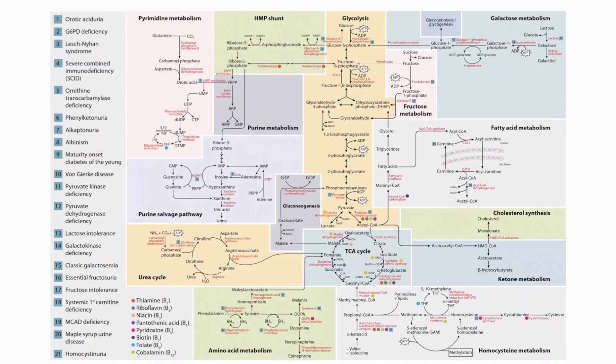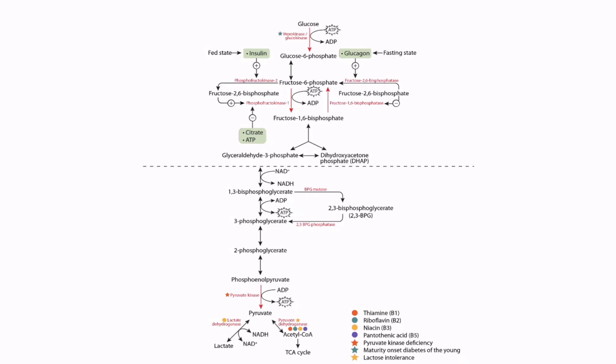This figure is from section 1 of Metabolism and provides an overview of the key metabolic pathways. In this section, we're focusing on glycolysis. Notice that the key enzymes are shown in red. Also note that some of the reactions are reversible, shown by bidirectional arrows, while others are irreversible, shown by the red arrows. This dotted line is important to keep in mind because the reactions below the line occur two times for every one molecule of glucose.